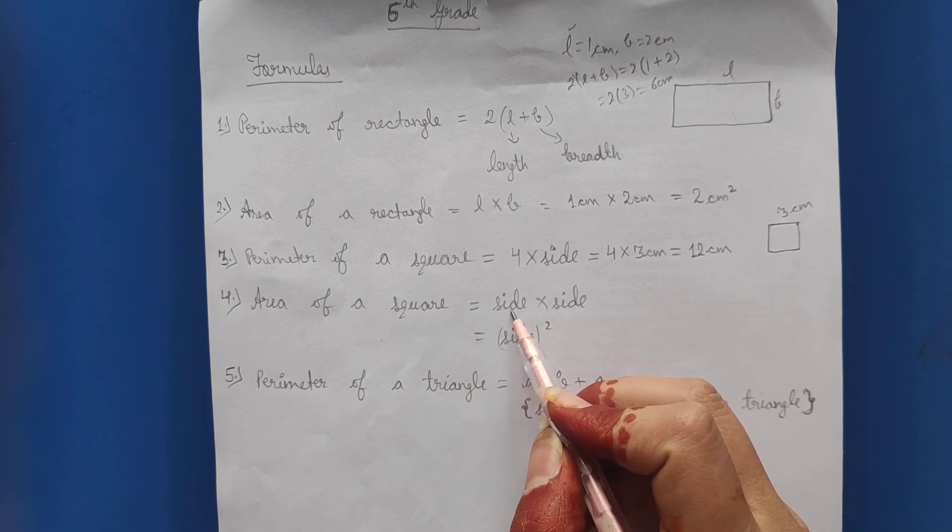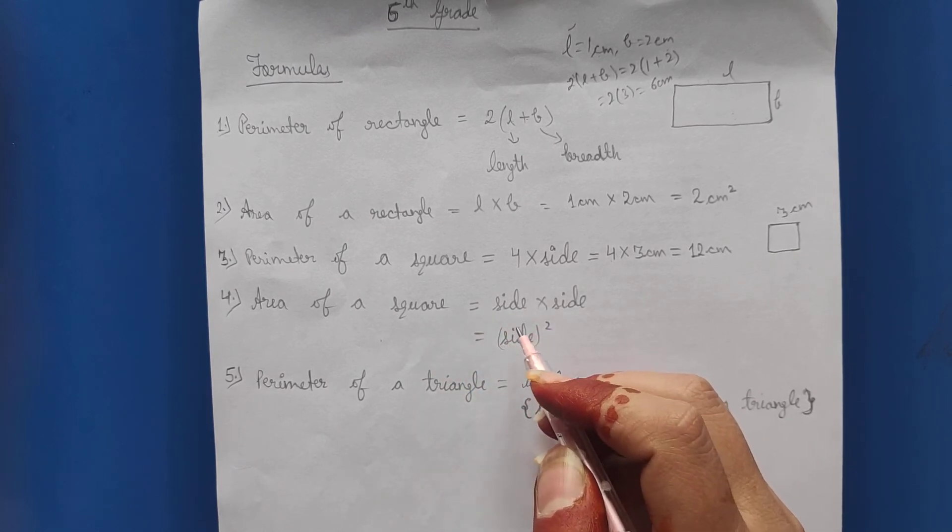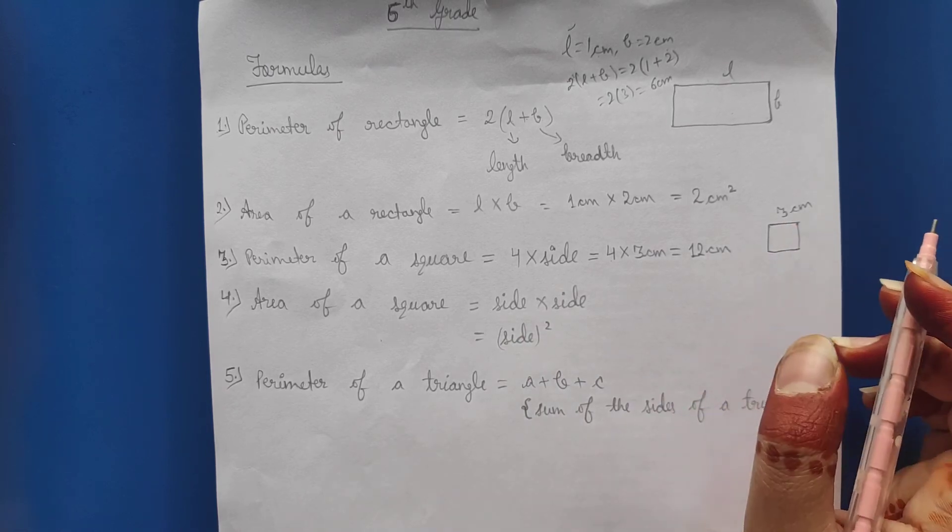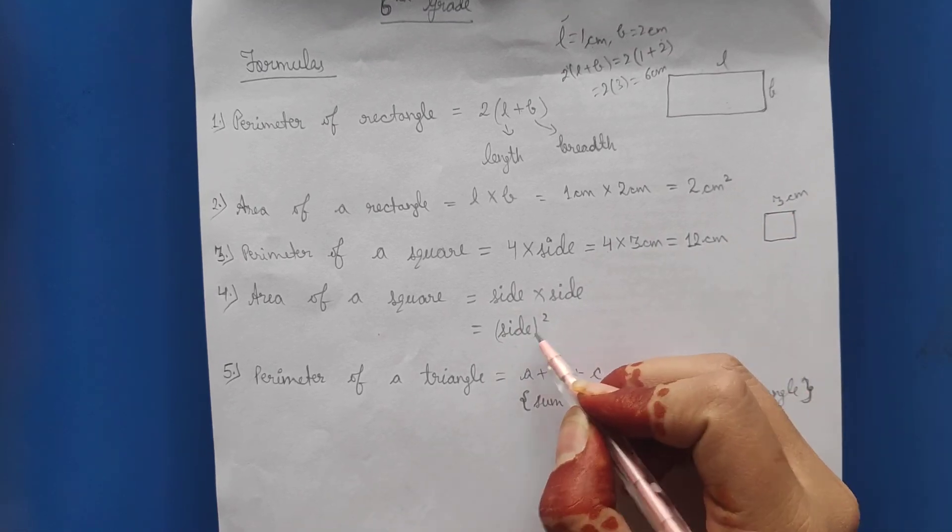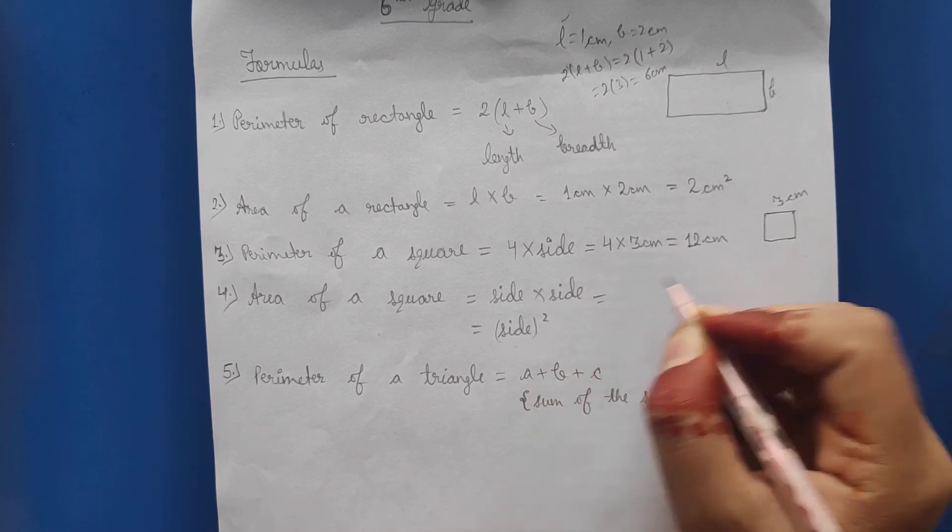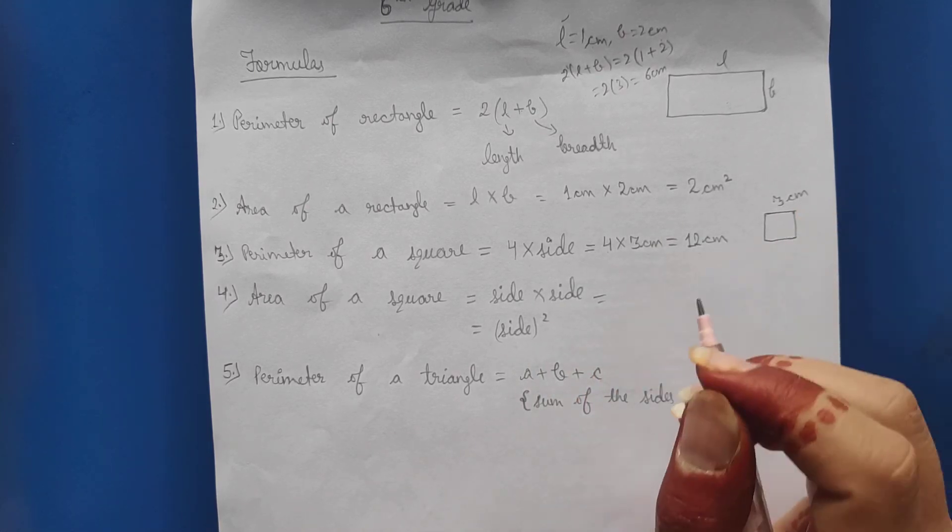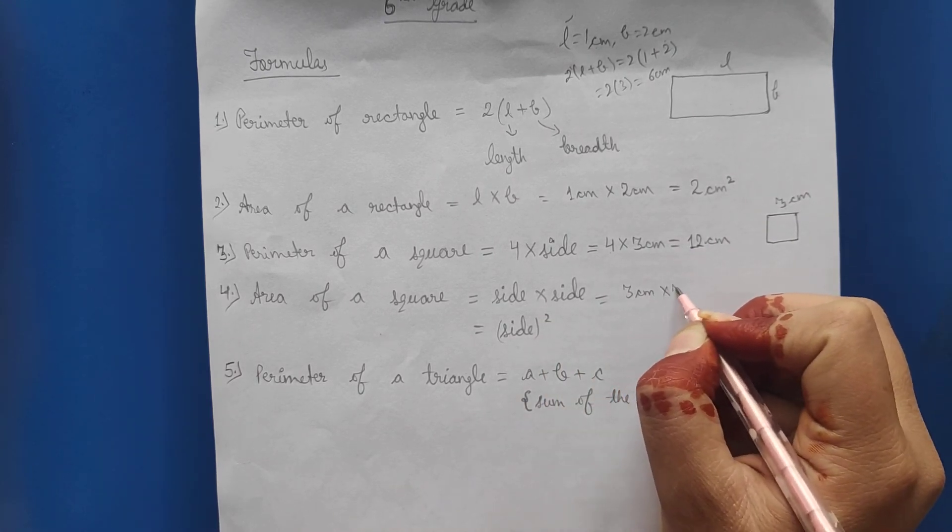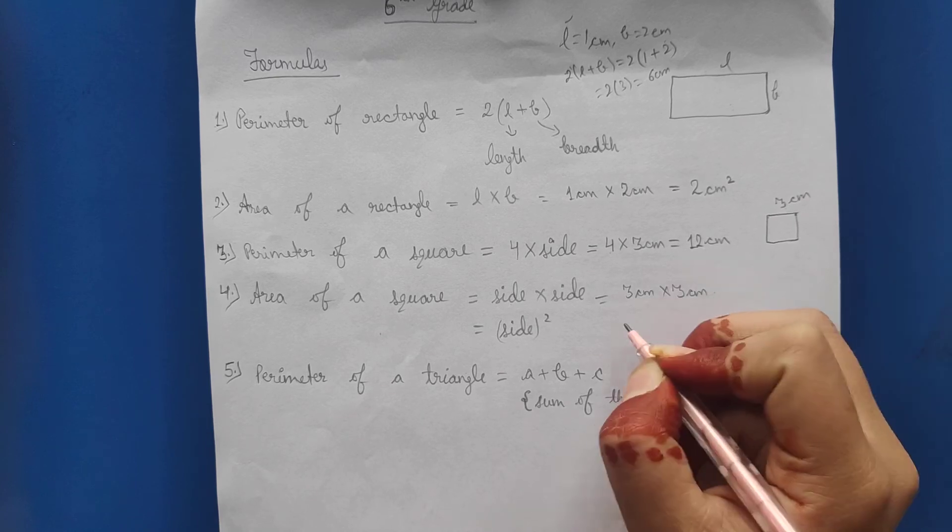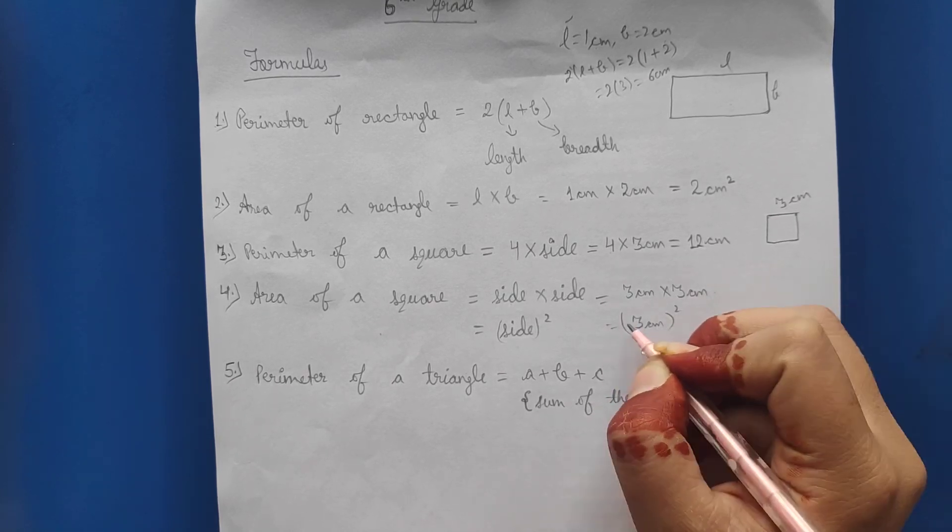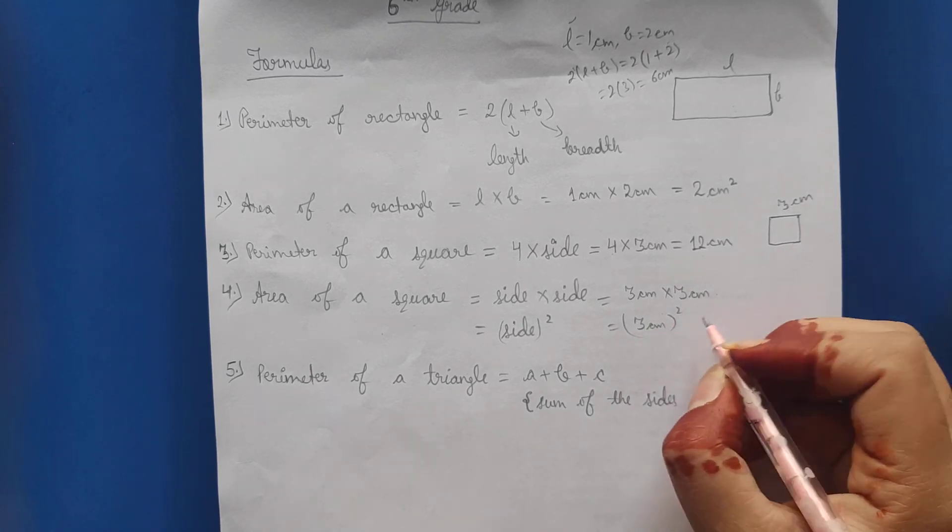Next is area of a square. So the area of a square is side multiply by side. You can also read this as side square. So suppose the same example is 3 centimeter. We will do 3 centimeter multiply by 3 centimeter or 3 centimeter square.